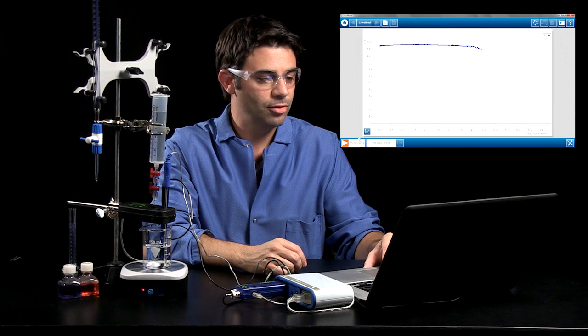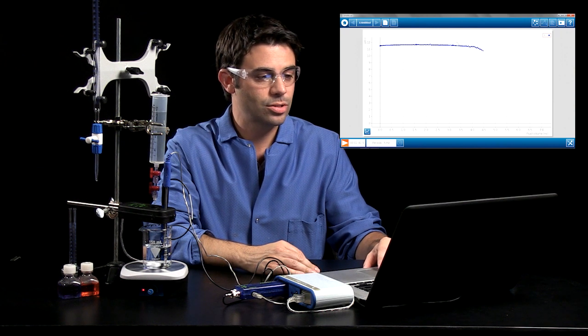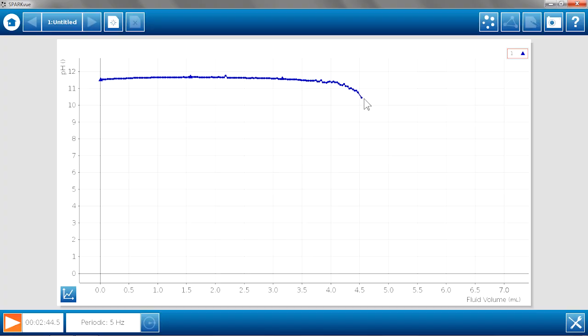So we can see, after a couple of minutes of data collection, the pH is starting to gradually go down. And now it's going down steeper. And now we see those big drops in pH that are indicative of the equivalence point being reached. And we'll let this go for a little bit longer to round out that pH curve.